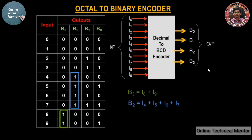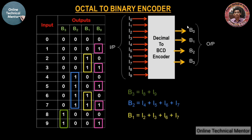For b1, inputs 2, 3, 6, and 7 make it high, so b1 = i2 OR i3 OR i6 OR i7. For the last output b0, the odd-numbered inputs 1, 3, 5, 7, and 9 make b0 high, so b0 = i1 OR i3 OR i5 OR i7 OR i9. These are the four Boolean expressions for the encoder.